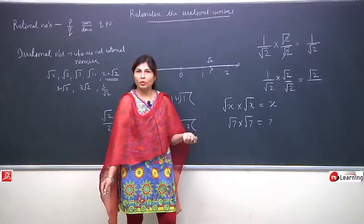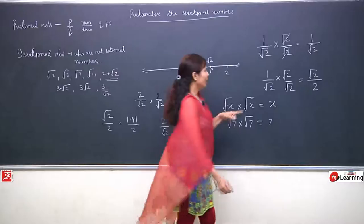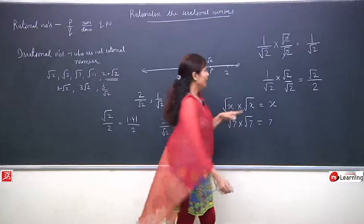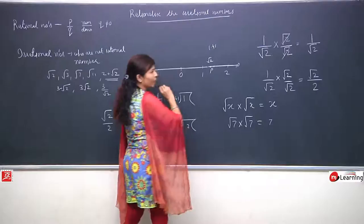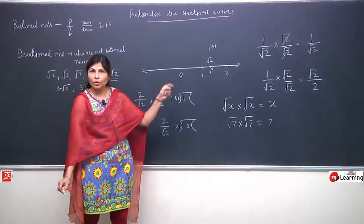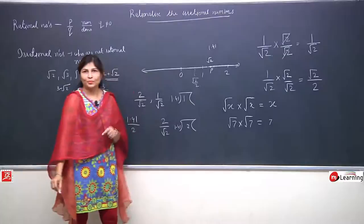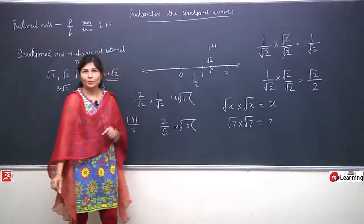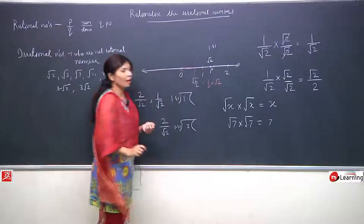So here this identity applies and root 2 multiplied by root 2 becomes 2. See friends, what a nice answer came - root 2 upon 2. We have already plotted root 2. The value of root 2 is 1.41, close to 1.5. Now after rationalization our answer is root 2 upon 2, which means half of root 2. So we can divide that portion into 2 equal pieces. We have halved root 2 and can now easily plot it.